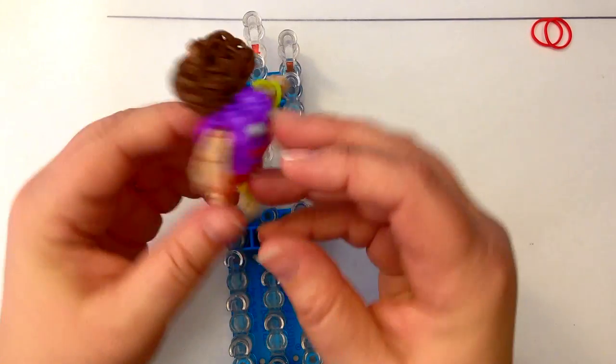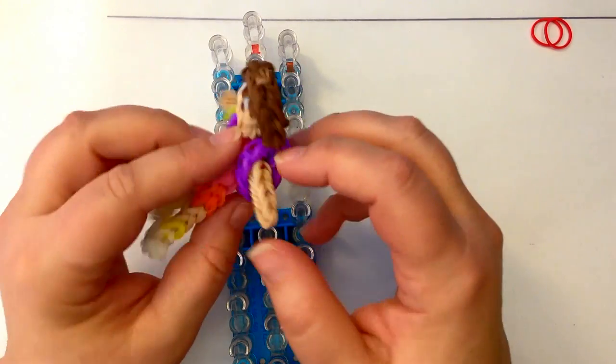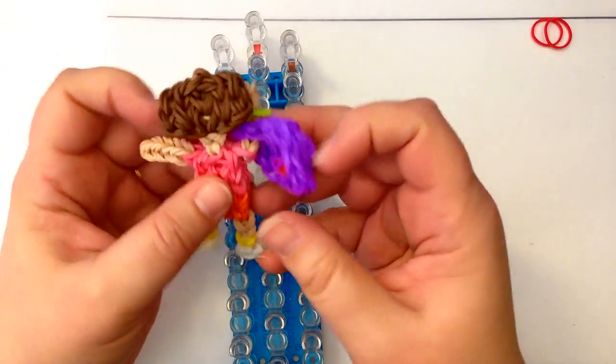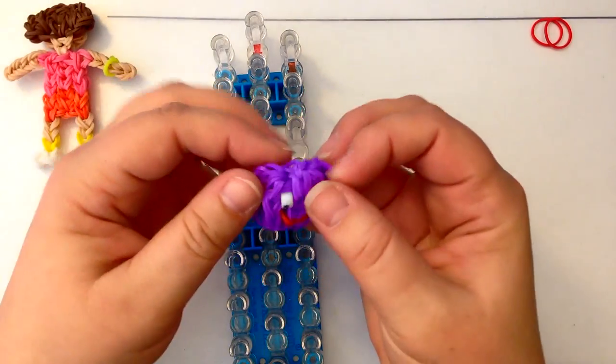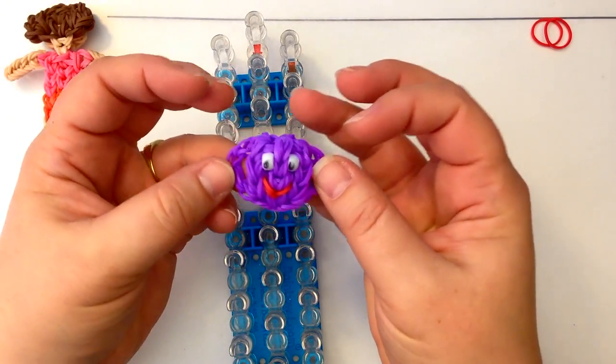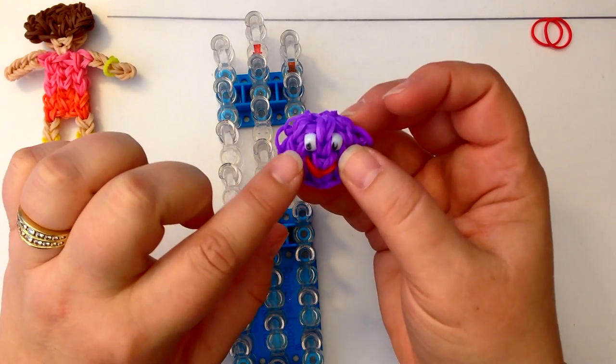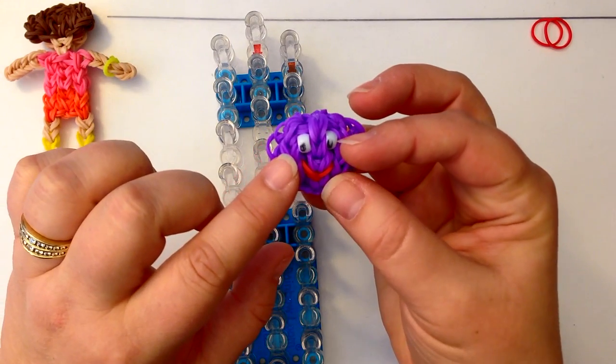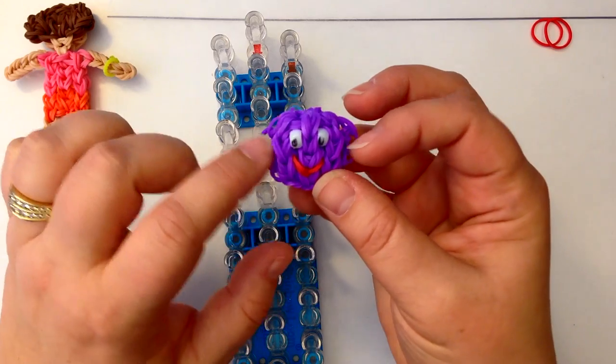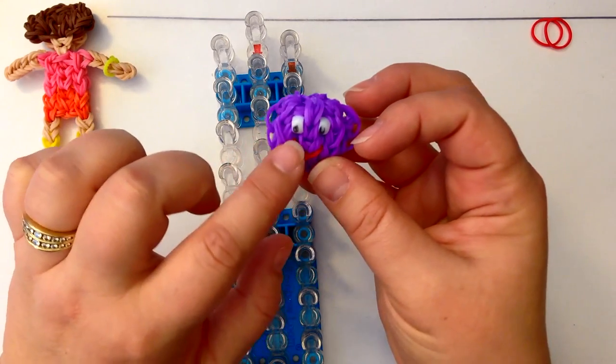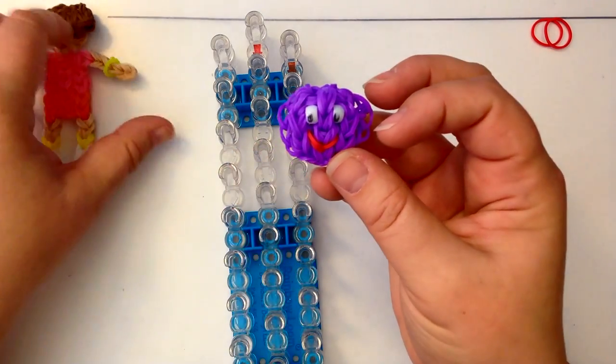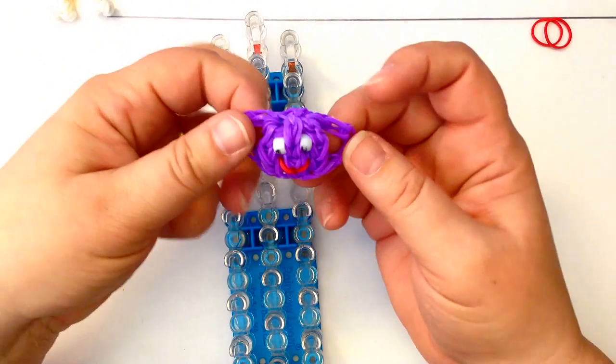So what I thought we'd do first is make backpack, and this is a detachable little backpack. You're going to need purple bands and some red bands, and I'm using the white pony beads. They're the mini pony beads, and then I've just used a black marker to do the eyeballs on him. So let's get started.